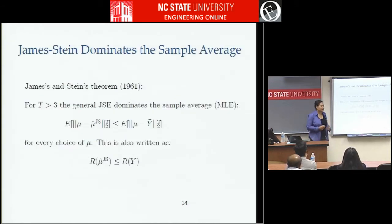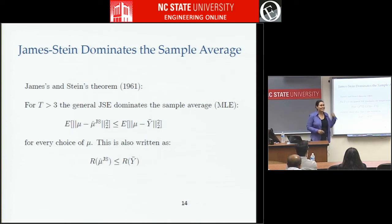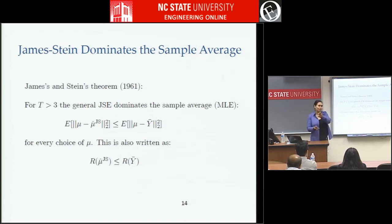The James-Stein estimator really does dominate the sample average — you need more than three tasks, but then in a squared error sense you're going to do better than just taking the separate sample averages. Importantly, it's not saying that every individual mean estimate will be better, but that if you add them all up, the total squared error will be better. So you might do a little worse on some means but better on others — overall you're doing a better job.